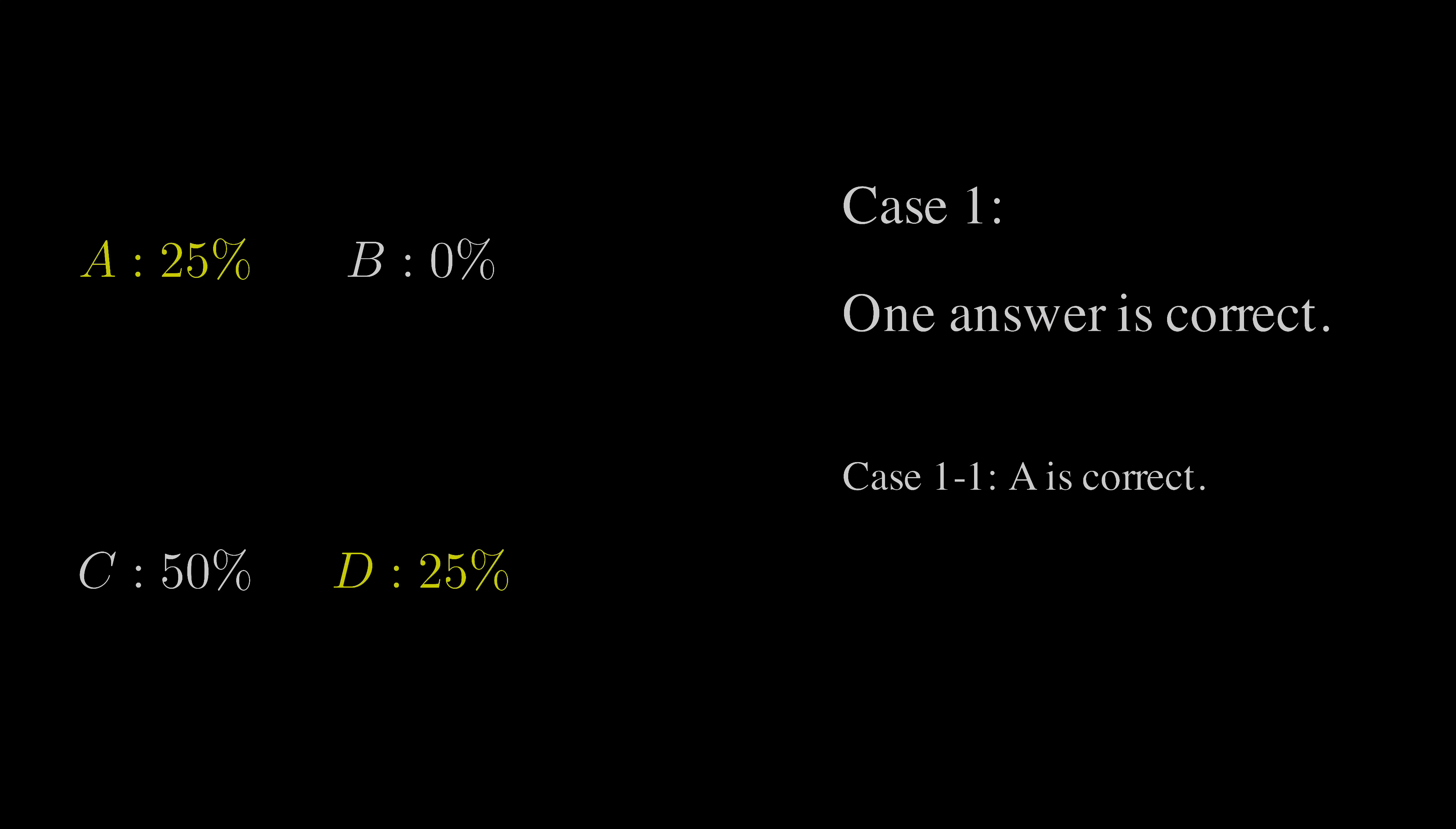A and D can be correct if only one of them exists. But because both of them exist, neither of them now is correct.